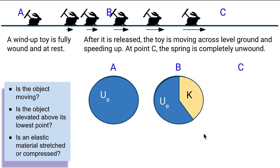But at point C, the problem says that the spring is completely unwound. And so that means there's no energy stored anymore in that elastic material. All the energy has to be in the form of kinetic energy. It's all due to the object's motion. So if we were going to do a problem, we would be comparing either position A to B or B to C or A to C. And that's how we're going to be building equations to predict what's happening in certain situations.